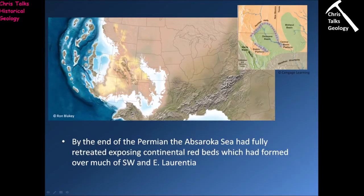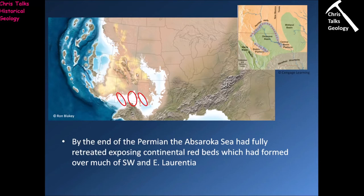This map shows the general positions of the three basins — the Midland, the Delaware, and the Marfa — with the sea retreating westward. These areas became isolated, leading to reef development, then evaporites being deposited as the water evaporated, and finally desert sediments in the form of red beds coming over the top once the water was gone.